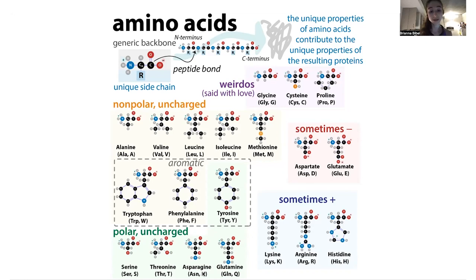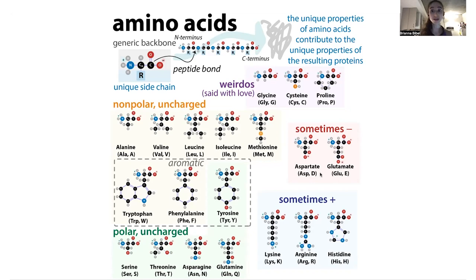For the one-letter codes of these: asparagine gets N (think of the N in asparagiNe), but then glutamine needs something else. Glutamine gets Q — you can think 'glu-Q' like 'glue Q', but don't confuse it with glutamate, which gets GLU and the letter E. Aspartate gets ASP and D. So you have D for aspartate and E for glutamate. Aspartate starts earlier alphabetically, so it gets D; glutamate gets E. D is closer to A (alanine), E is closer to G (glycine).